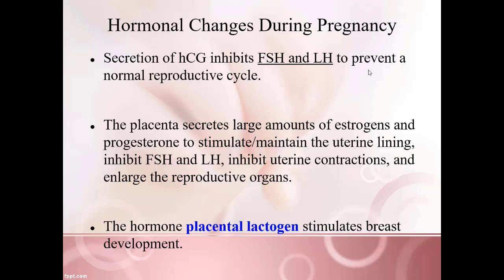The secretion of HCG is important because it will essentially turn off LH and FSH, which prevents a normal reproductive cycle — you don't want another ovulation to keep occurring. Once a blastocyst is implanting within the uterus, the whole goal of the reproductive system should be to nourish that mass and give it the best environment possible for further development. The placenta will secrete large amounts of estrogens and progesterone to maintain the uterine lining and keep it stable.